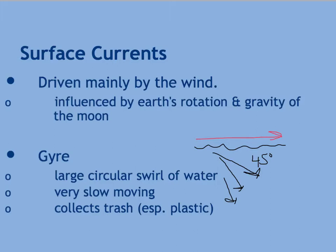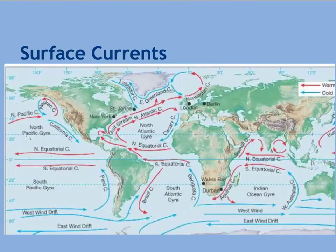This creates what we call a gyre, which is a very large circular swirl of water. It's very slow-moving. You might have heard of the Great Pacific Garbage Patch, which exists because the Pacific gyre has collected a lot of trash. It's theorized that there are probably trash patches in the center of all the other gyres as well, which they've since confirmed is trash.